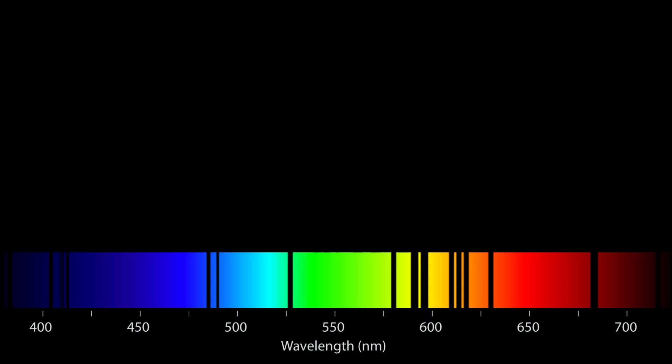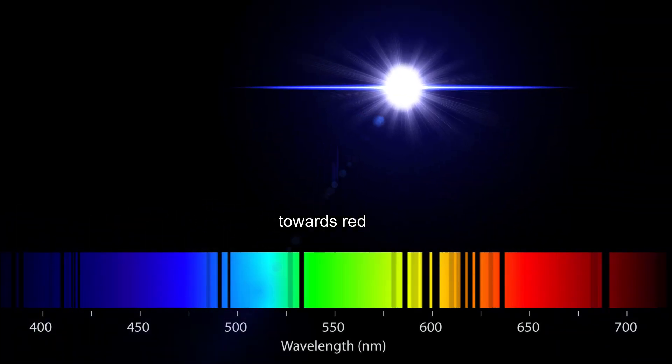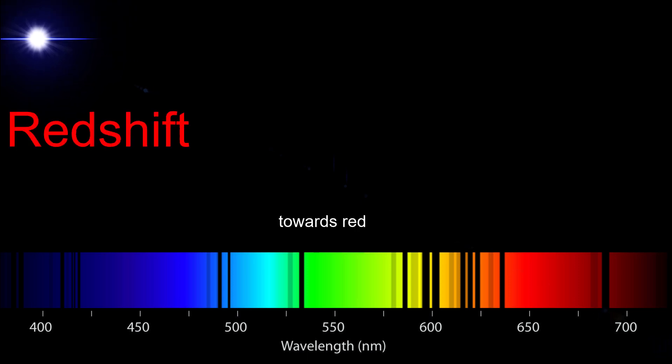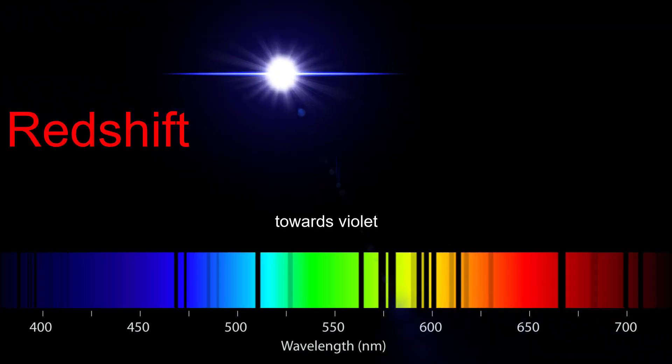The amount it's shifted will depend on how fast the light is moving towards or away from us, respectively. This is called redshift. It's similar to the way the sound of a car horn changes as the car drives past you.